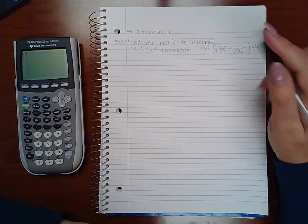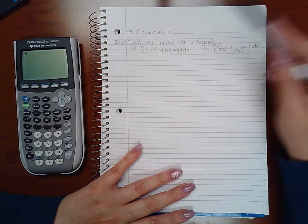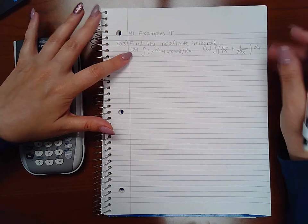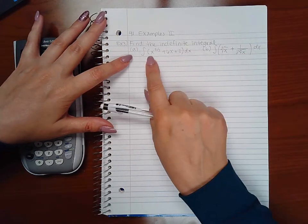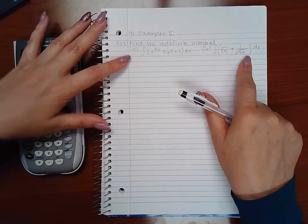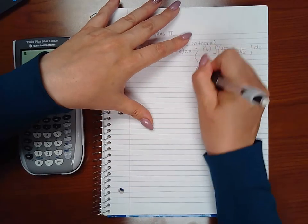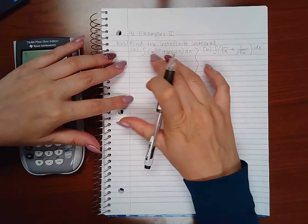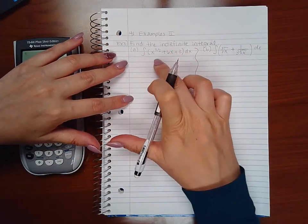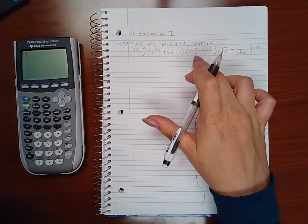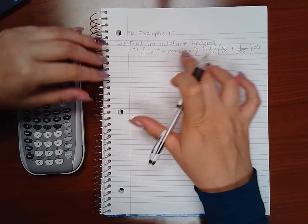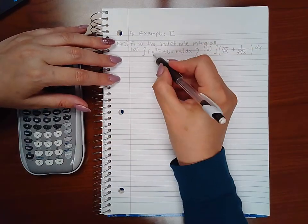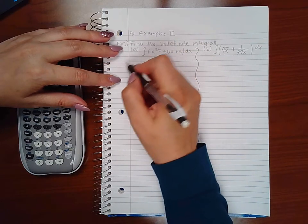This is section 4.1, example 2. It says find the indefinite integral and we've got two different problems. Notice there's multiple terms for each problem, so we're going to have to apply rule number five. Instead of separating it into each individual integration, I'm just going to integrate each problem separately.